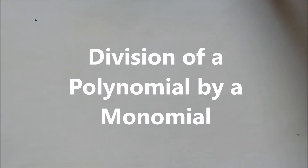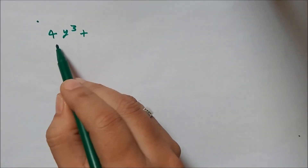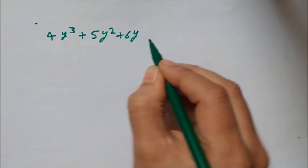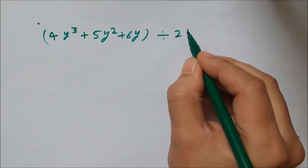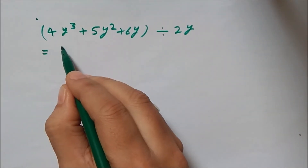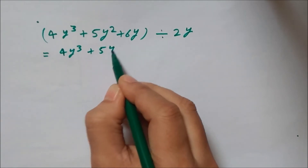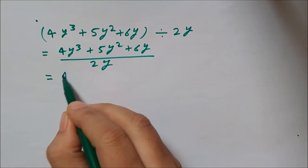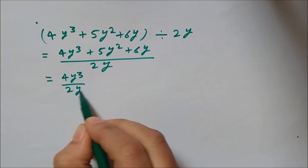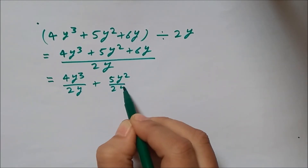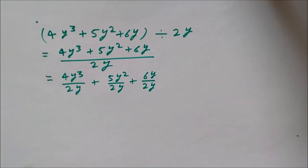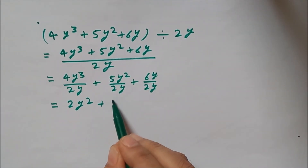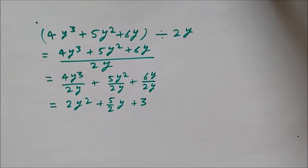We now look at the division of a polynomial by a monomial. Take 4y cubed plus 5y squared plus 6y, all divided by 2y. We divide each term of the polynomial by 2y separately: 4y cubed over 2y, plus 5y squared over 2y, plus 6y over 2y. This gives 2y squared plus 5y over 2, plus 3. That is the result of the division.